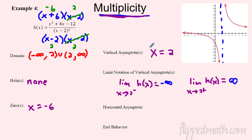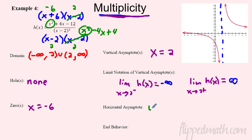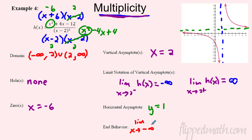Now for horizontal asymptotes: the degree of the numerator is x squared and the denominator is also x squared — same power. If you multiply out the bottom, (x minus 2) squared = x squared minus 4x + 4. Since both leading terms are x squared, the horizontal asymptote is at y = 1 (the ratio of leading coefficients). You can see this on the graph.